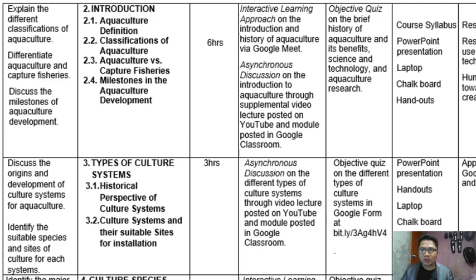In this module we will be touching on the historical perspective of the culture systems, as well as their sustainable sites for installation. You will be tasked to discuss the origins and development of these culture systems, identify the suitable species and sites, and learn about advances in culture systems. Our mode of delivery is still asynchronous — this is a YouTube video and you will also be tasked to answer the Google Form accessible via the provided link.